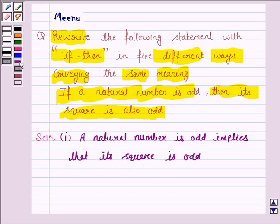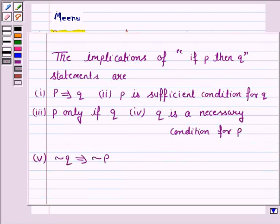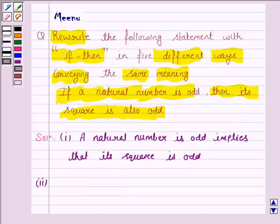The second way is P only if Q. That is: a natural number is odd only if its square is odd.